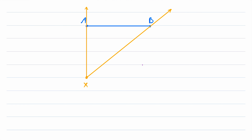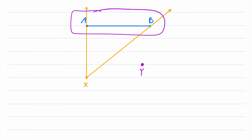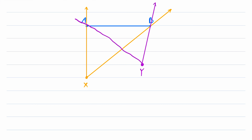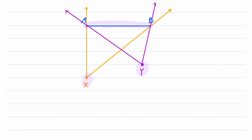We could also have a subtended angle with a vertex over here as well. Let's say this vertex is Y. Then the angle subtended by the line segment AB from the vertex Y is the angle whose vertex is at Y and whose rays pass through the endpoints of the line segment AB. So these are two examples of subtended angles. They have different vertices, but they are both subtended by the same line segment, which means that their rays both pass through the endpoints of that line segment.